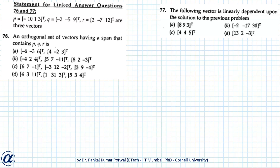In this question we are given three vectors — vector p, vector q, and vector r — and we want to find an orthogonal set of vectors whose span contains vectors p, q, and r. Basically, we want to find an orthogonal basis for the vector space that contains vectors p, q, and r.